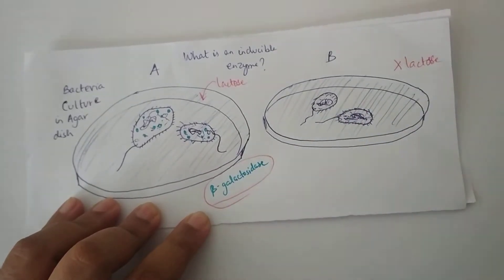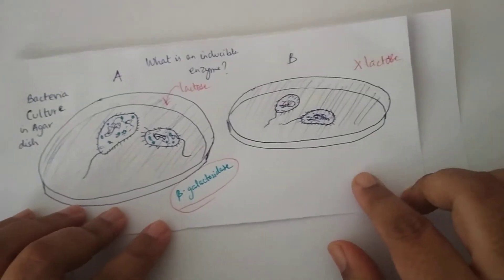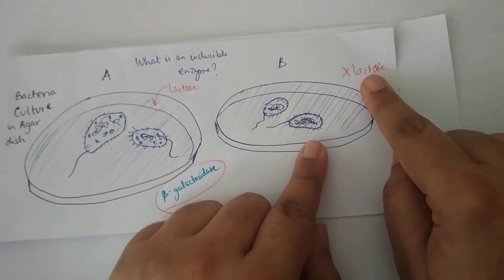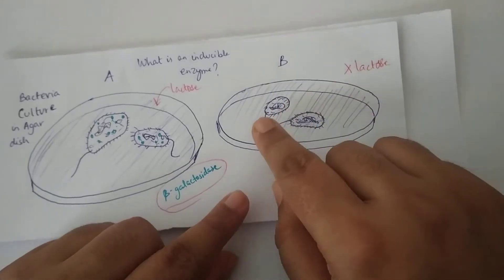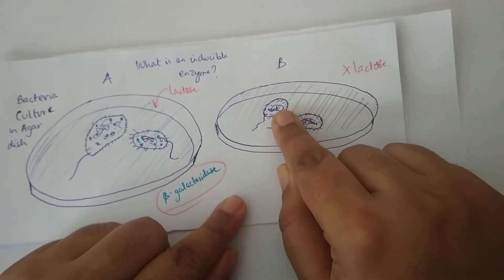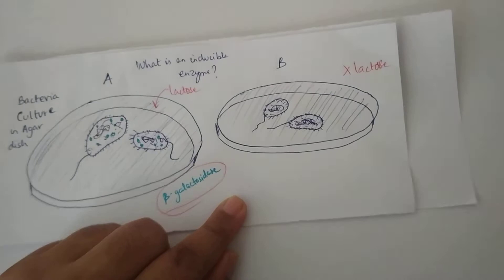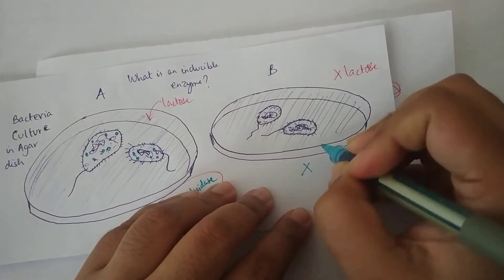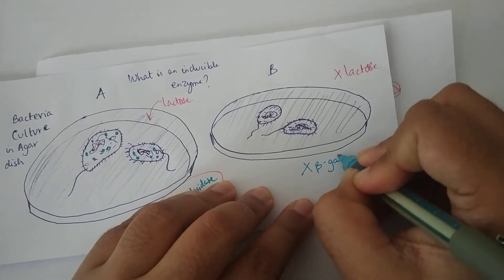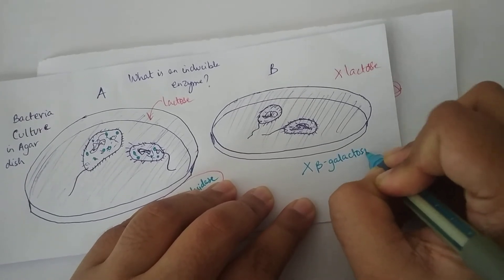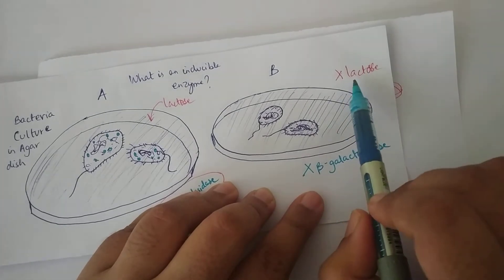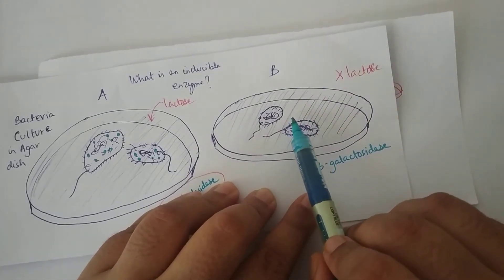Now this bacterial culture plate does not have lactose in it and these bacterial colonies will produce all other enzymes required but it will not produce beta galactosidase. And the reason is the substrate that is lactose is not there in the medium.